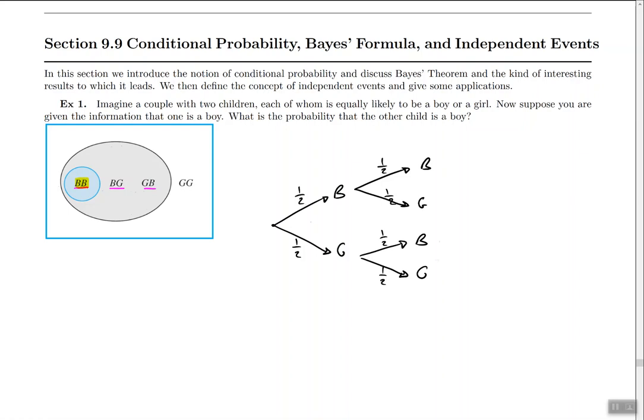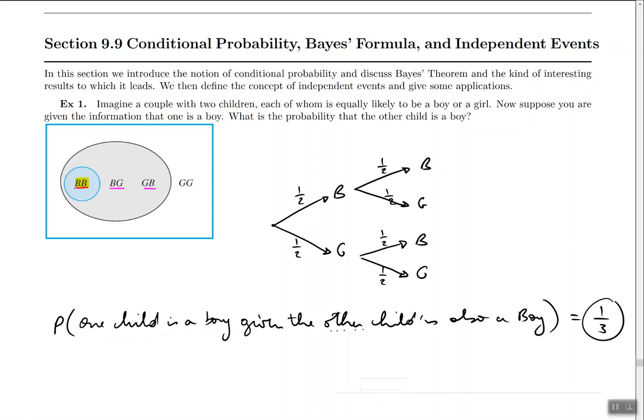So this means that the probability one child is a boy given the other child is also a boy is going to be one out of three. This is because the event where we have boy-boy only happens one time and the events where there is at least one child that is a boy can happen in three different ways: either boy-boy or boy-girl or girl-boy.